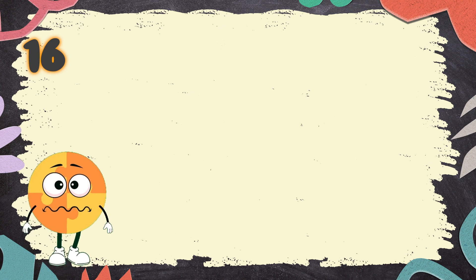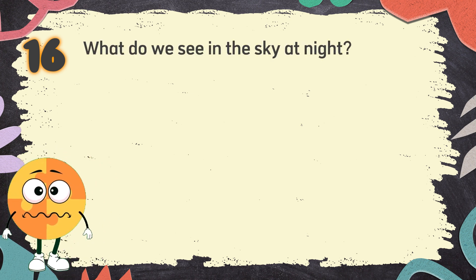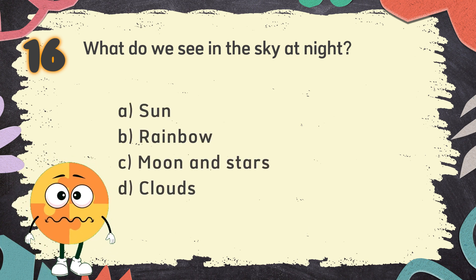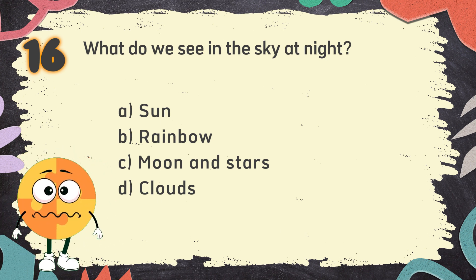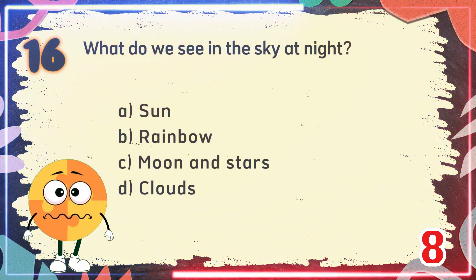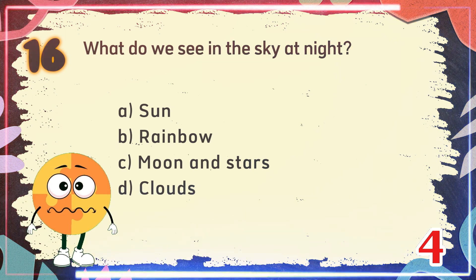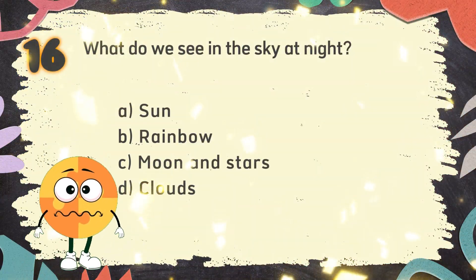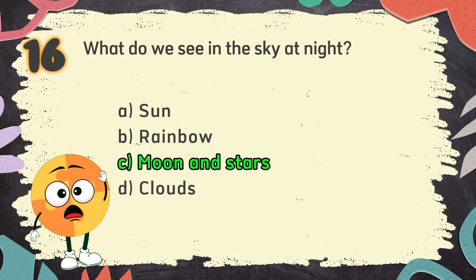Number 16: What do we see in the sky at night? The choices are: A. Sun, B. Rainbow, C. Moon and stars, D. Clouds. The correct answer is C. Moon and stars.